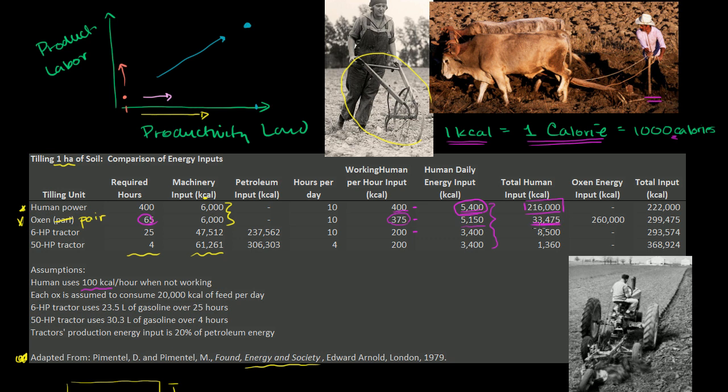Now, there still is other energy being done. Now all of a sudden, the oxen have gotten involved. If you assume that each oxen consumes about 20,000 calories a day, and you have two of them, so 40,000 calories per day just to feed the oxen, and you're going to do that for 6.5 days, the oxen are going to consume 260,000 calories to do this task.